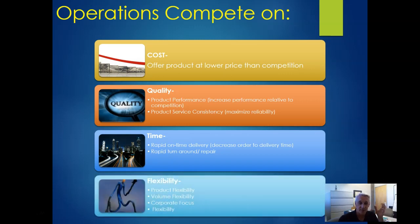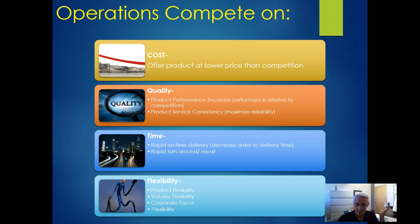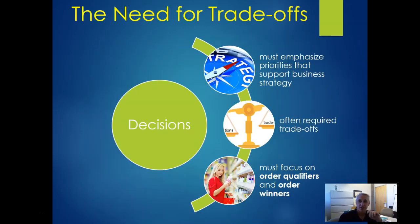Flexibility includes product flexibility and volume flexibility — can customers order a custom version? You can compete on any one of these. For startups, you may want to tailor toward one and work on another later. Some companies try to do all of them, but it's typically hard to be best at all simultaneously given the competition. There's often a need for trade-offs — you want to emphasize priorities that best support the business strategy.